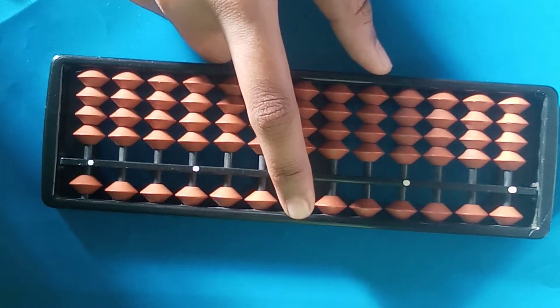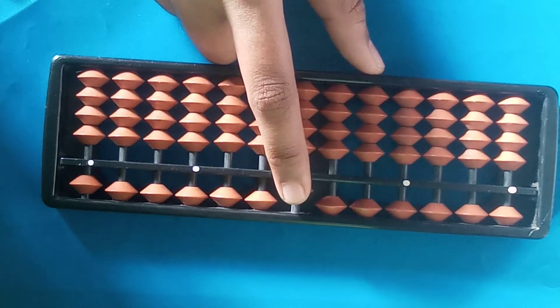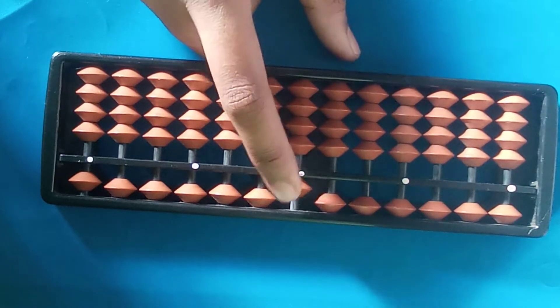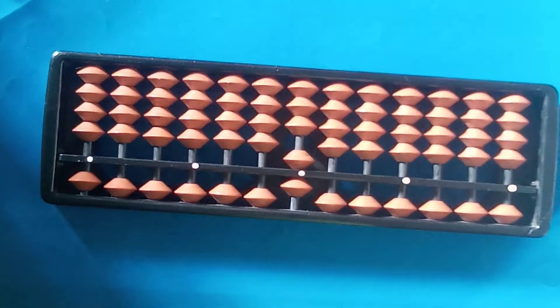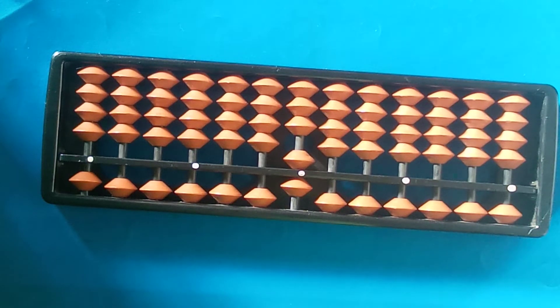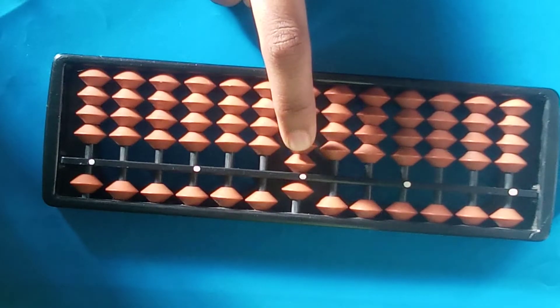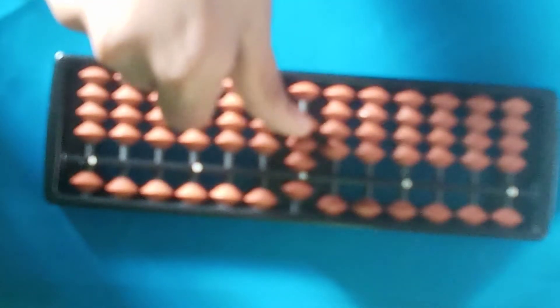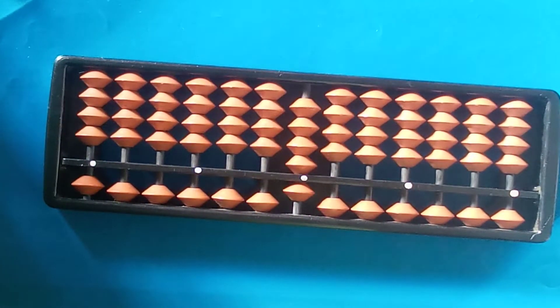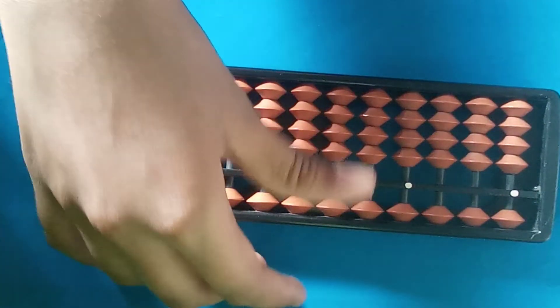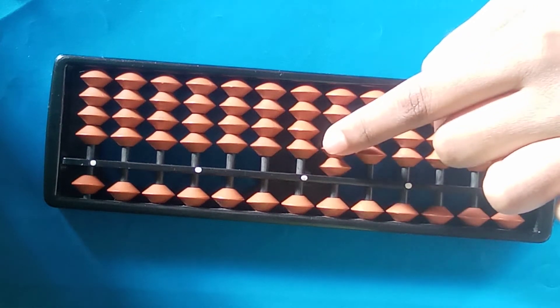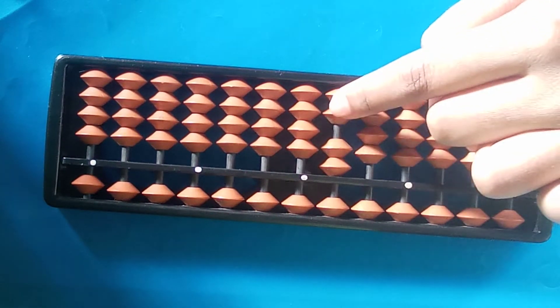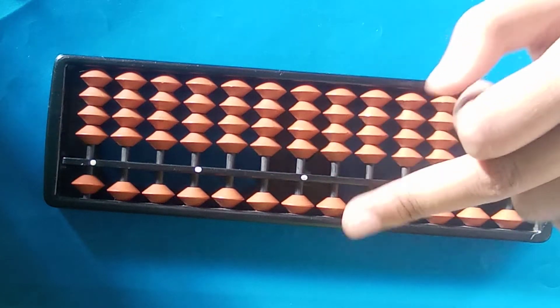If the upper bead is down, then its value is five, not one. And this is down so it is five. Then we will add this lower bead. Then tell me what is the value? Two. Guess? I tell, this is six, this will be seven, this will be eight, and this will be nine.